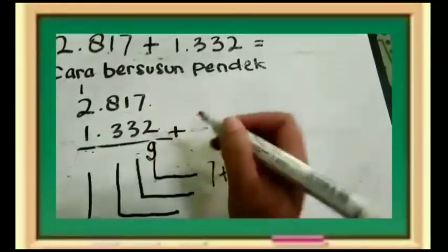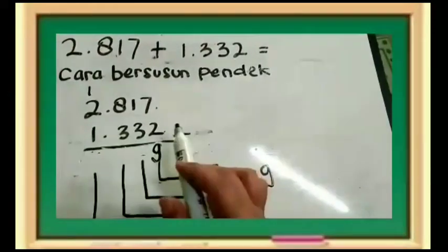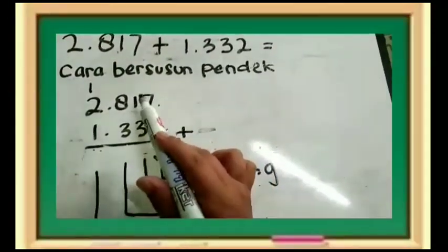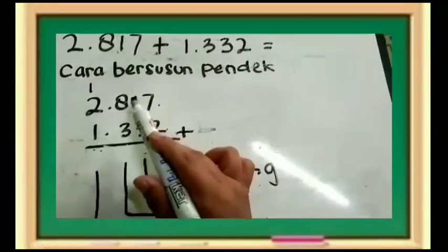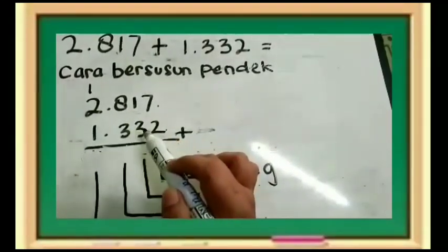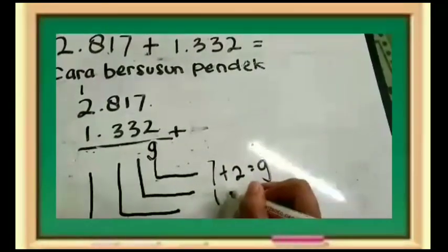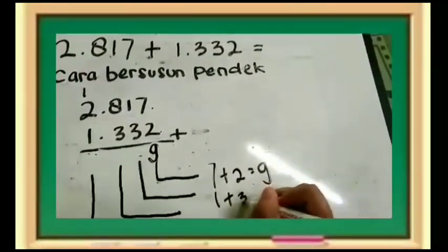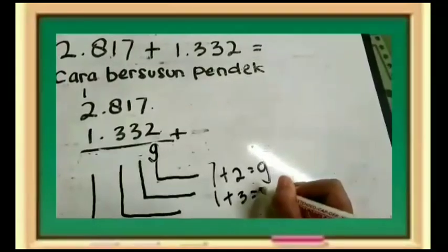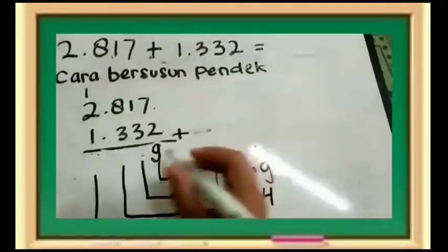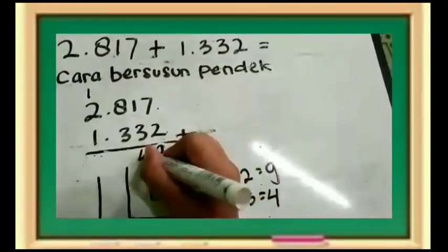Kita simpan angka 9 di sini. Sembilan. Kemudian, kita lanjutkan dengan puluhan. Satu. Ini nilainya 10 ya. Satu ditambah 3 sama dengan berapa? Satu ditambah 3 sama dengan 4. Kita simpan angka 4 di sini.